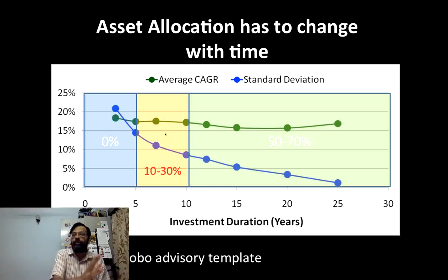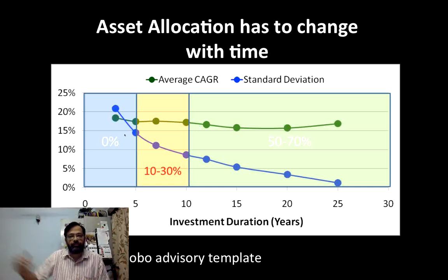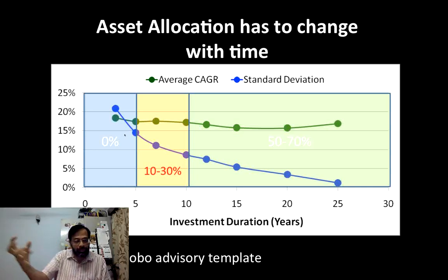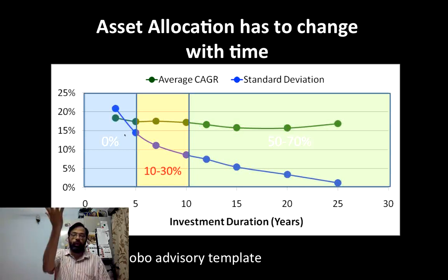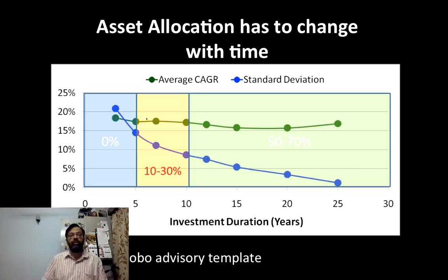So I must reduce my equity. Soon it will become a short-term goal — a long-term goal will become an intermediate-term goal and then a short-term goal with the passage of time. As time passes, you must understand that the equity exposure must be reduced. Otherwise the risk in the portfolio will become huge because the volatility — the standard deviation — is extremely high. As a deadline approaches, the volatility shoots up, and that's very important to recognize and reduce the equity allocation.